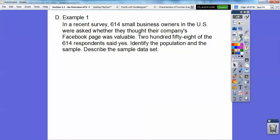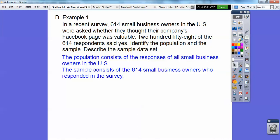Here's an example. In a recent survey, 614 small business owners in the United States were asked whether they thought their company's Facebook page was valuable. 258 of the 614 respondents said yes. Let's identify the population and the sample and describe the sample data. The population consists of the responses of all small business owners in the United States. The sample consists of the 614 small business owners who responded in this survey. The sample data consists of the 258 owners who said yes and the other ones, which is 356, who would have said no.